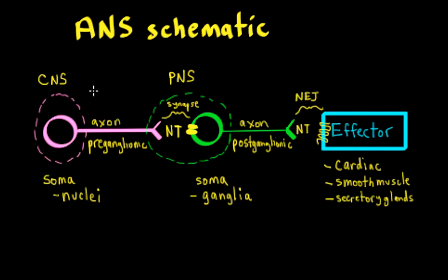We have our preganglionic neuron cell bodies found in nuclei in the central nervous system. Their axons project to a postganglionic neuron where they release a neurotransmitter on a ligand-gated excitatory cation channel at that synapse, and the somas of the postganglionic neurons are found in the peripheral nervous system in ganglia. Their axons then project to an effector organ cell and release the neurotransmitter on a G-protein-coupled receptor at the neuro-effector junction. The effector organs include cardiac cells, smooth muscle cells (either multi-unit or single-unit smooth muscle), and secretory glands.